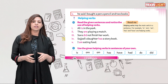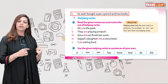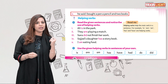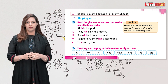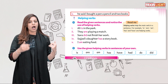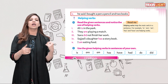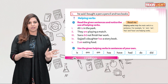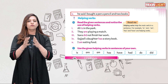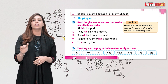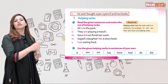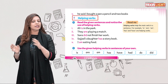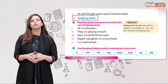Fifth sentence: He said, 'I bought a pen, a pencil and two books.' 'H' in He is capital as it starts the sentence. After said, put a comma, then open inverted commas. 'I' is capital. Between pen and pencil, put a comma. Put a full stop after books, then close the inverted commas, because these are the exact words spoken by him.